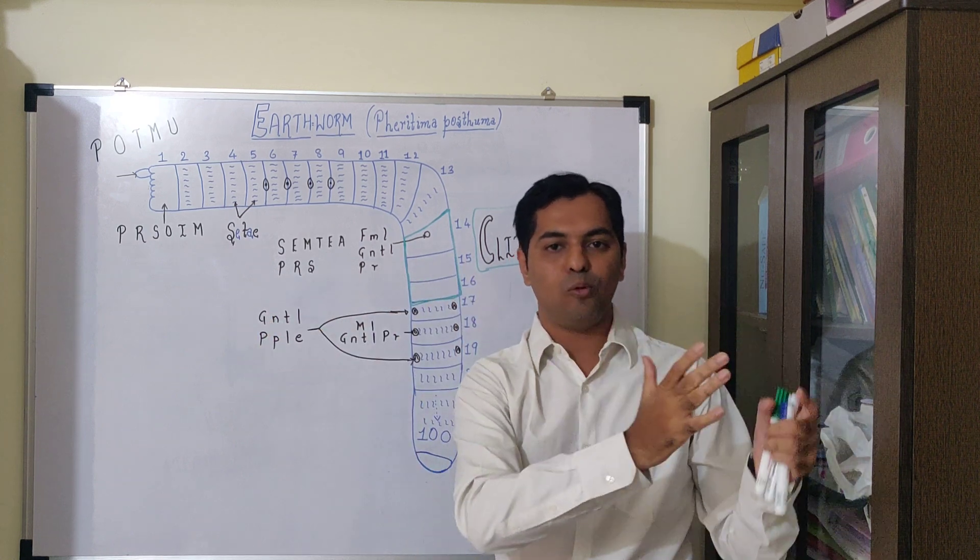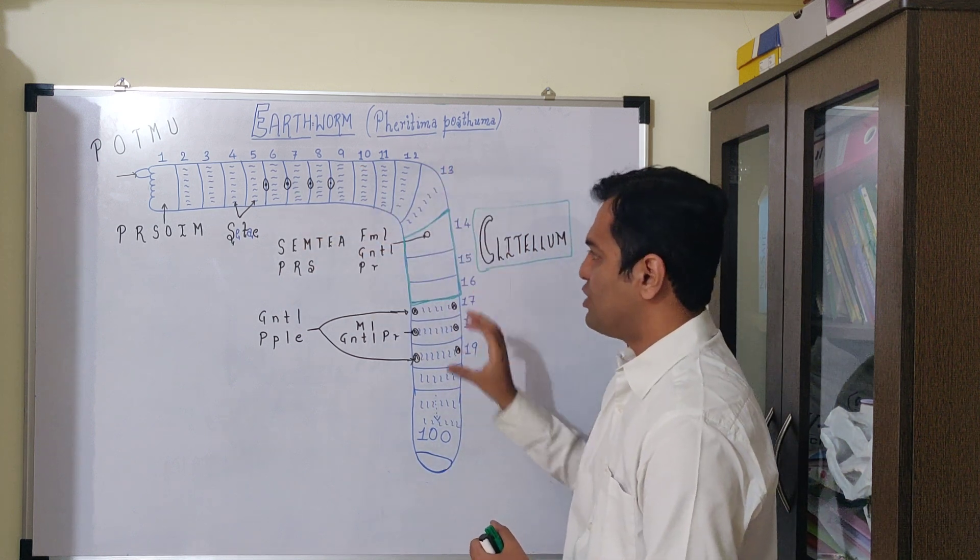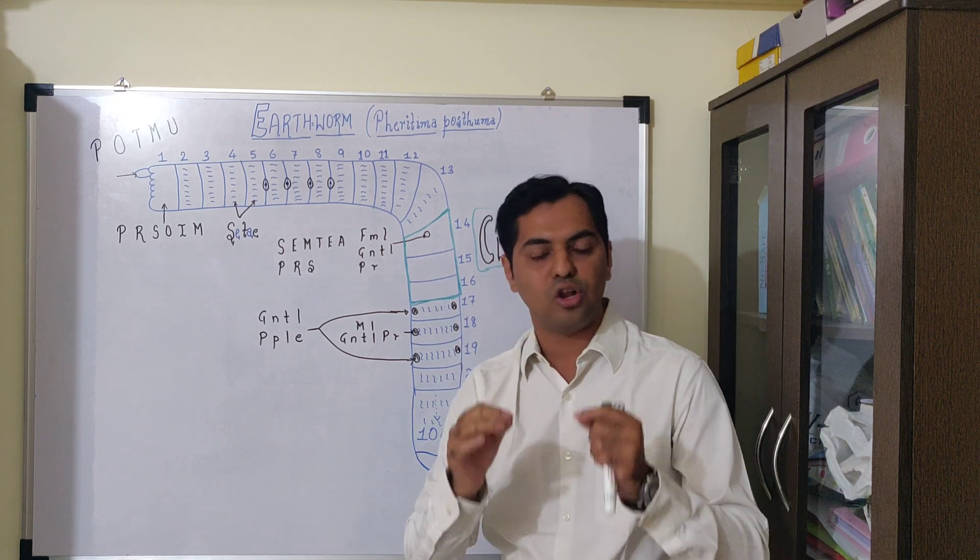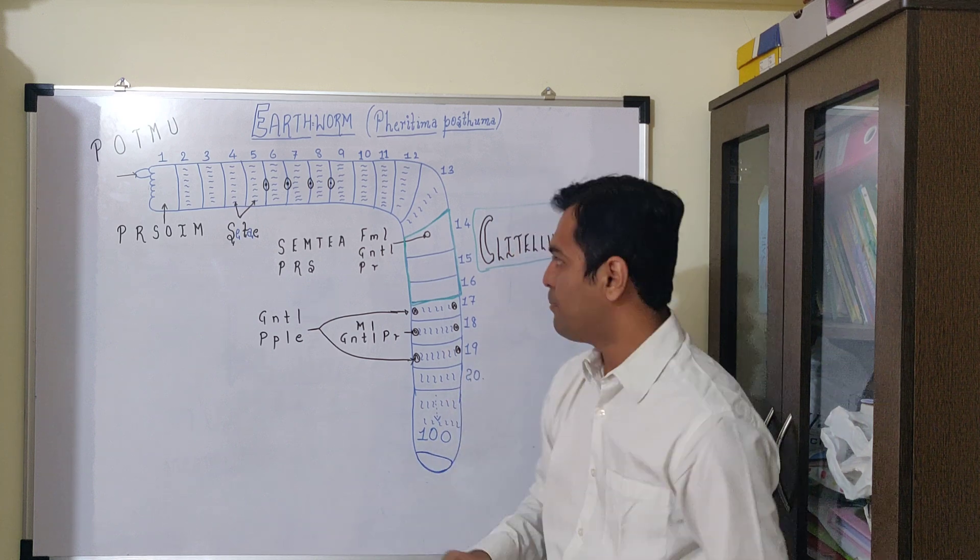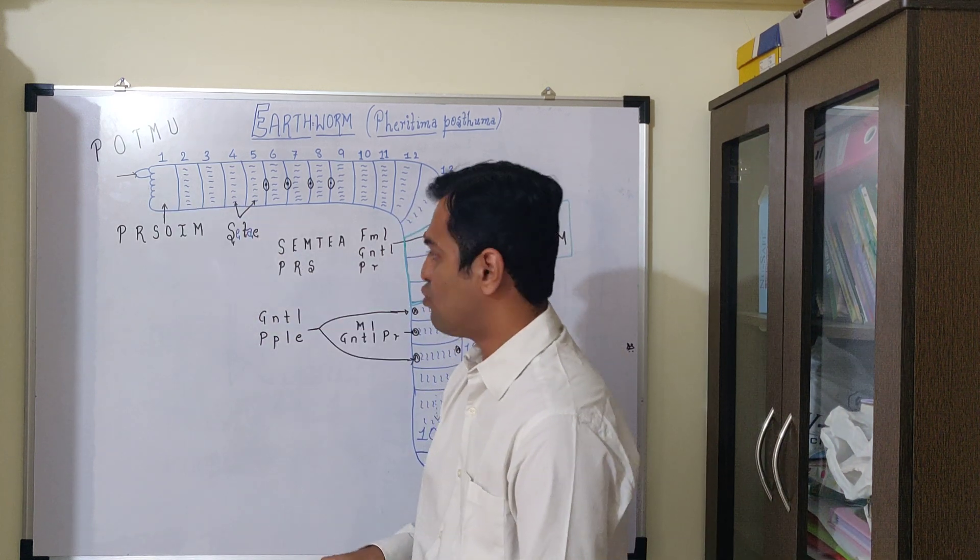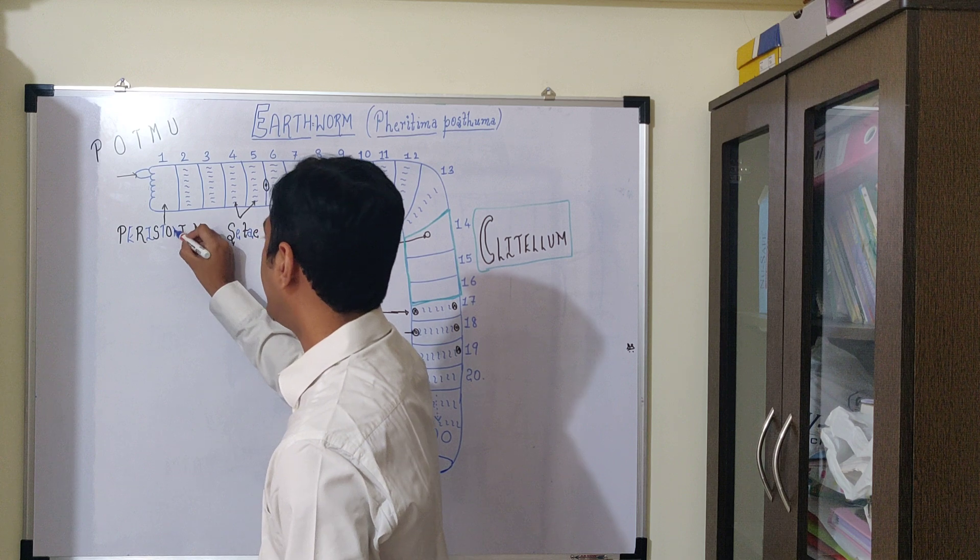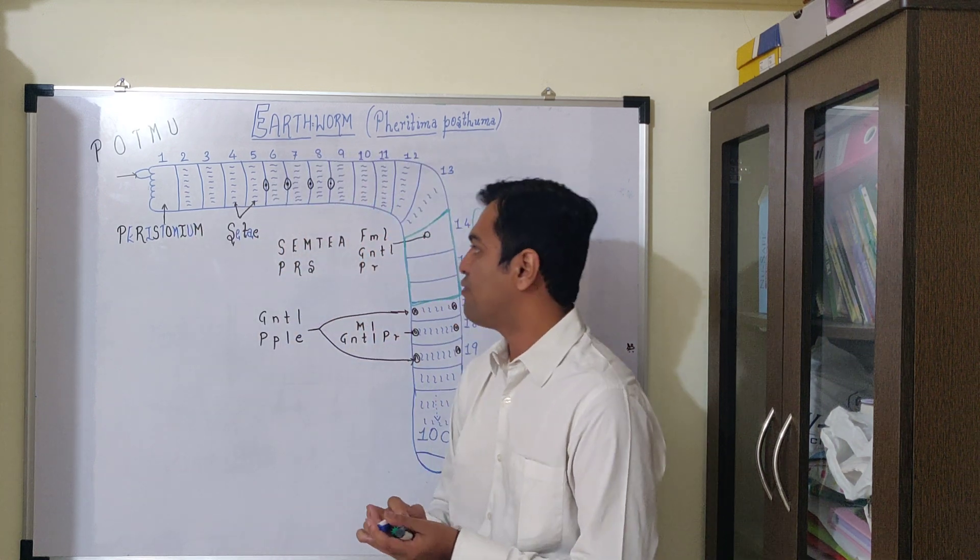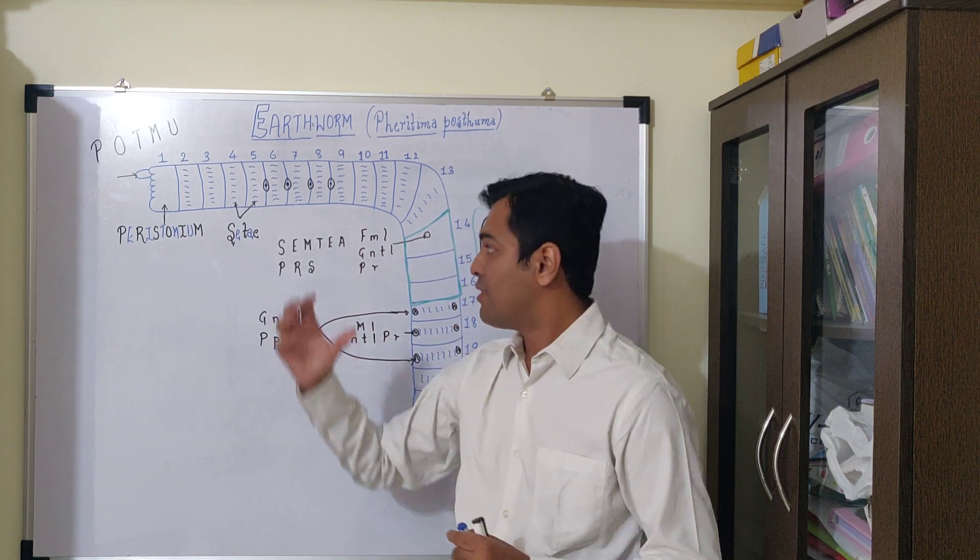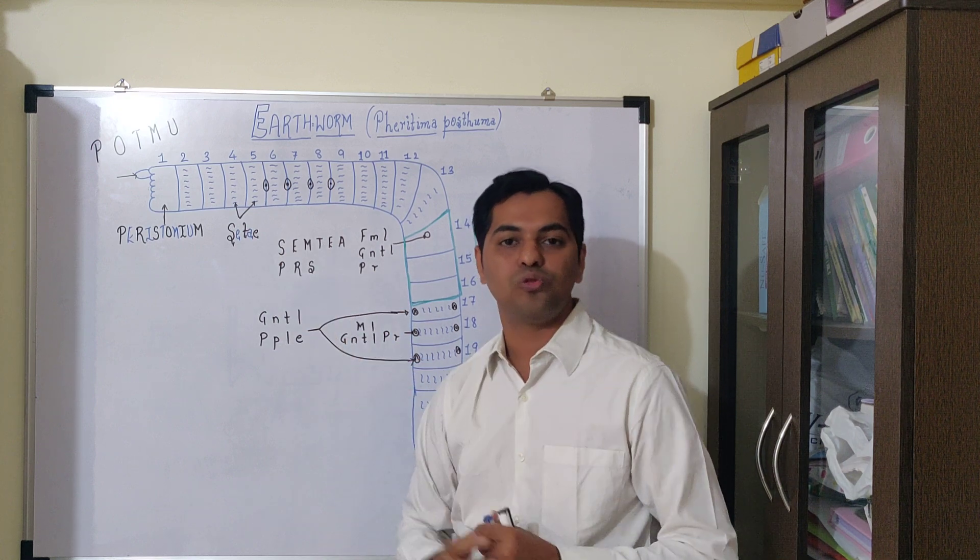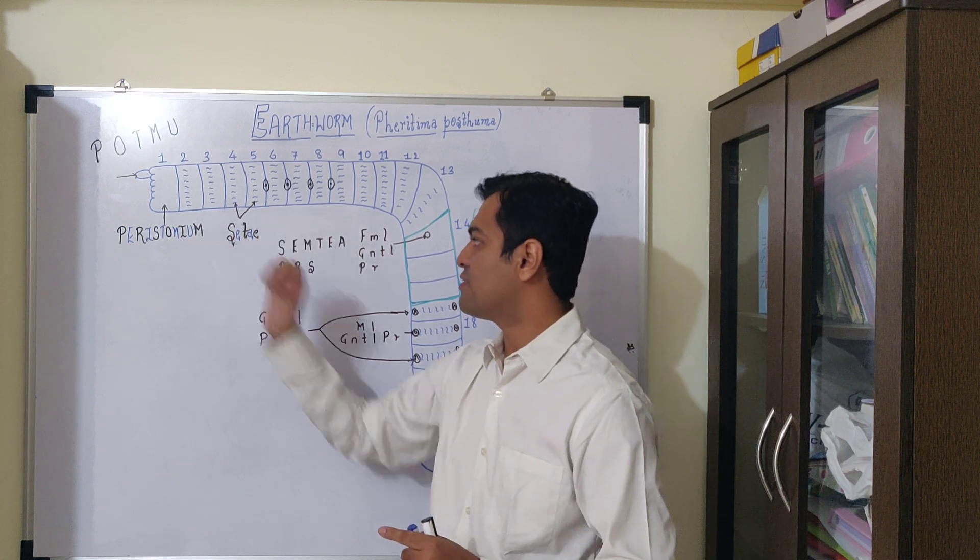There are certain unique segments to discuss in detail. The first segment of the earthworm is known as peristomium. The word stoma refers to mouth. The peristomium leads into the mouth cavity, followed by buccal cavity and pharynx.